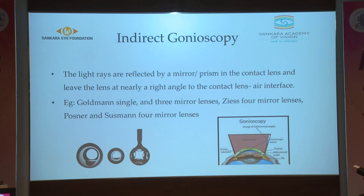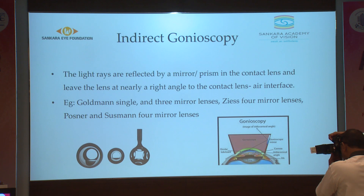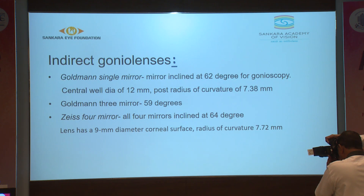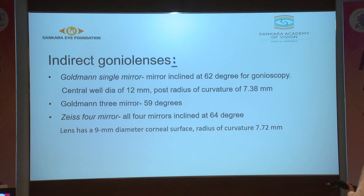That is why we use indirect gonio lenses, where light rays are reflected by a mirror or prism in the contact lens and leave the lens at nearly a right angle to the contact lens-air interface. The lenses used include Goldman single mirror, 3-mirror, Zeiss 4-mirror, Posner and Sussman 4-mirror lenses. The diameter of a Goldman mirror lens is larger than that of the Zeiss 4-mirror lens, which is why the Zeiss is able to perform indentation gonioscopy.